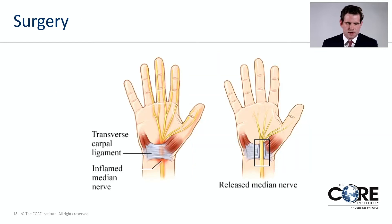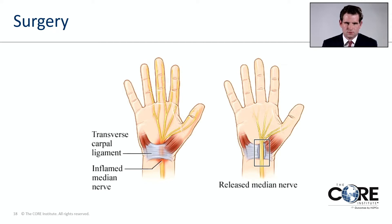Surgery is an outpatient procedure that tends to be fairly quick. During surgery, the transverse carpal ligament — that one side of the box — is cut or incised, which helps relieve pressure within the carpal tunnel and on the median nerve. This can stop the disease from progressing, and taking pressure off the nerve allows it to start healing. It's important to note that during surgery there is no nerve repair — all we do is take pressure off the nerve. If the carpal tunnel is fairly advanced, there may already be permanent nerve damage that may not fully resolve.